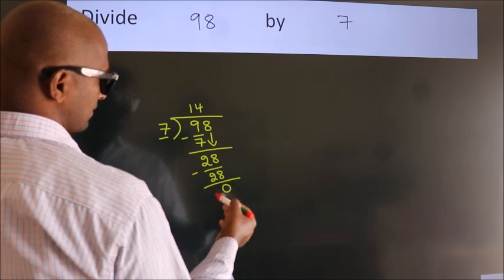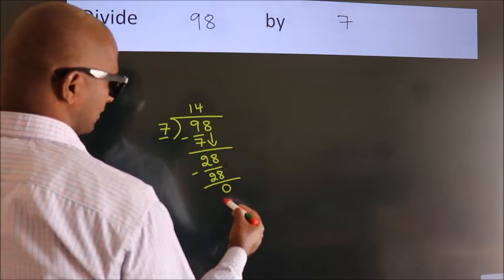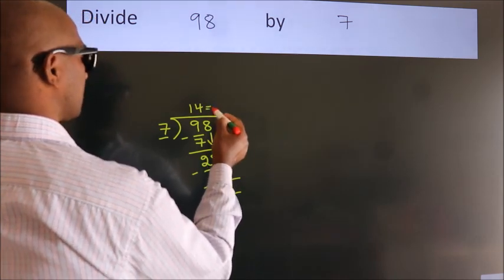After this, no more numbers to bring it down. And we got remainder 0. So this is our quotient.